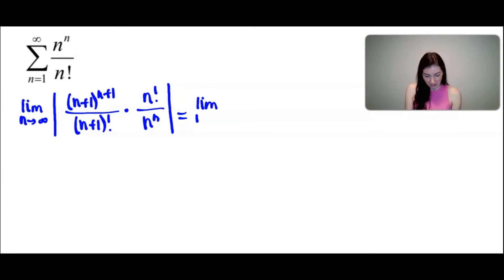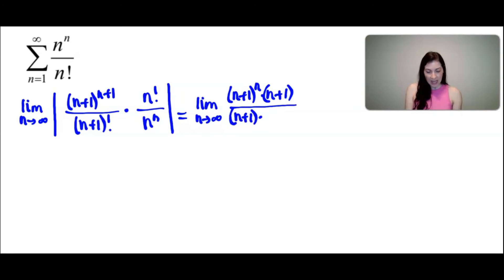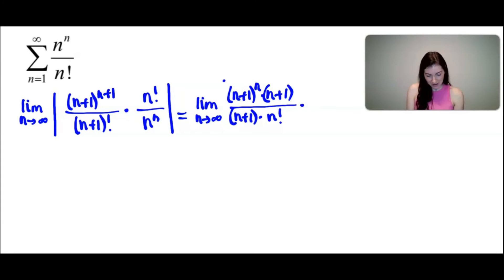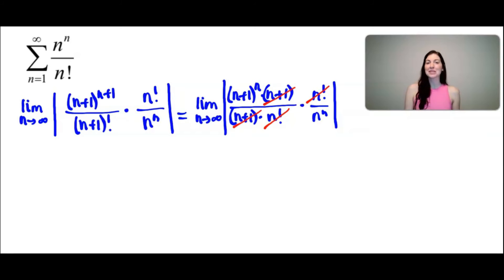Now let's do some simplifying. I can rewrite (n+1)^(n+1) as (n+1)^n times (n+1). And I can rewrite (n+1) factorial as (n+1) times n factorial, taking out the first term. This gives us (n+1)^n times (n+1) over [(n+1) times n!], times n! over n^n. The n! terms cancel, and the (n+1) terms cancel, which simplifies things quite a bit.